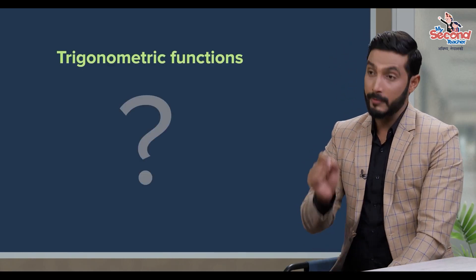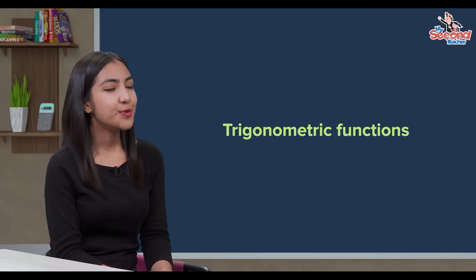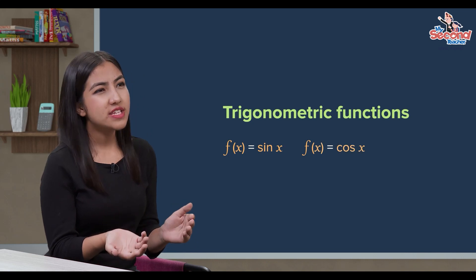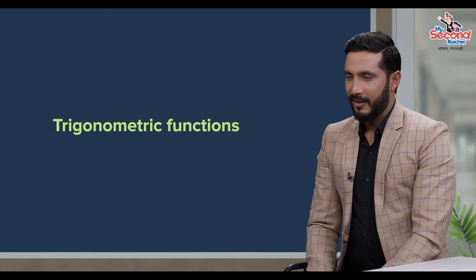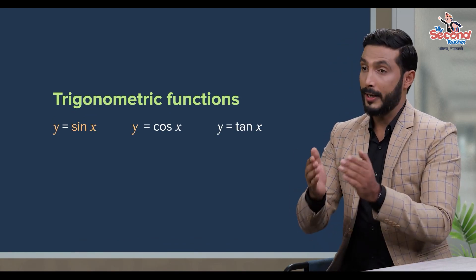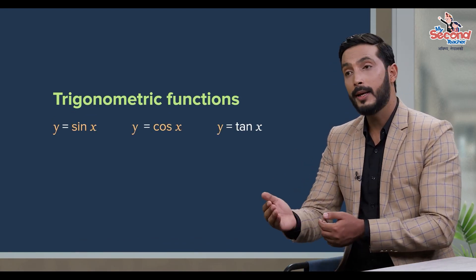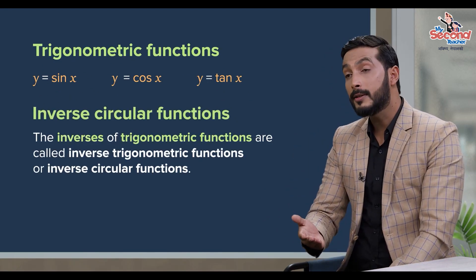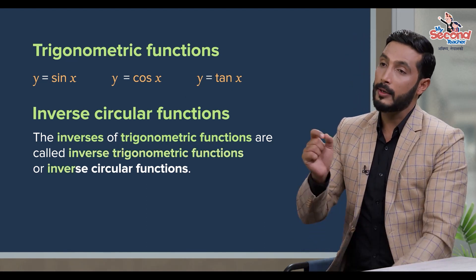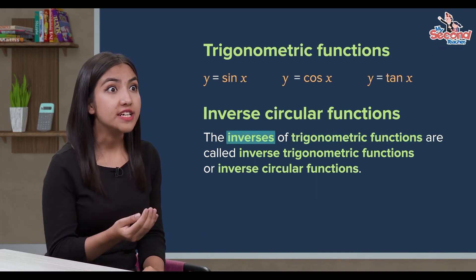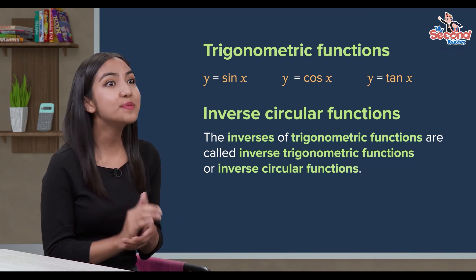Inverse trigonometric function suru garna vandha aghi trigonometric function baane ko zayi kiyo? Trigonometric function baane ko da f of x equals sin x, f of x equals cos x iste function aruto. Tini haru lai y equals sin x, y equals cos x ra y equals tan x baani lekhna sakhinza. Inai trigonometric function aru ko inverse lai inverse trigonometric function va inverse circular function anin zha.